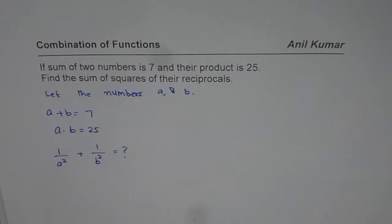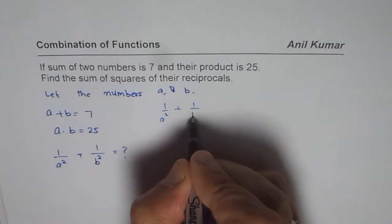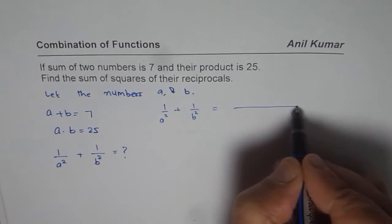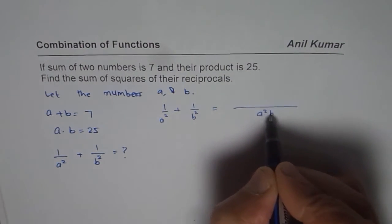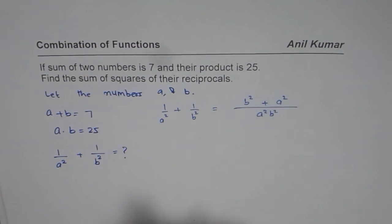Now how do we do this? We will simplify this expression. We can write 1 over A squared plus 1 over B squared with their denominator as A squared B squared, and we get B squared plus A squared in the numerator.